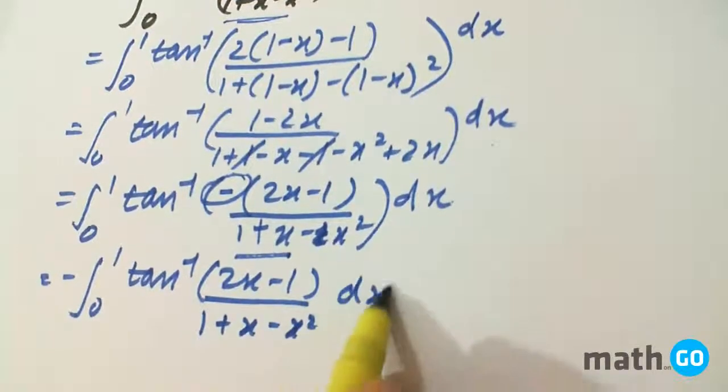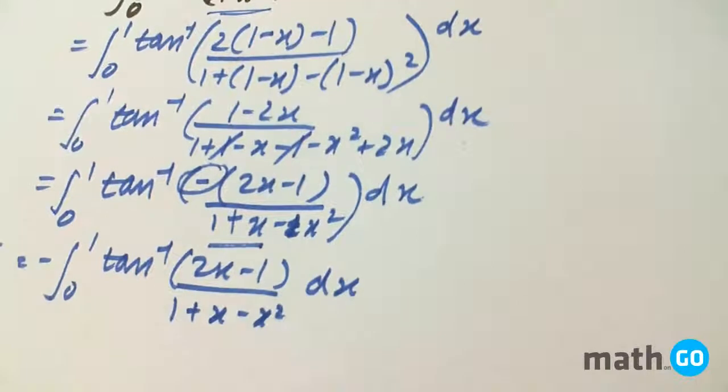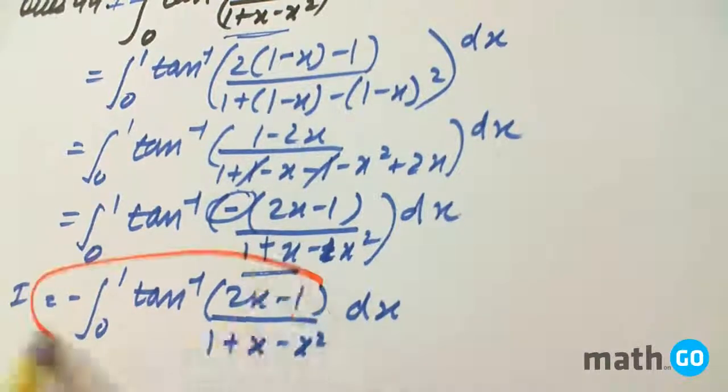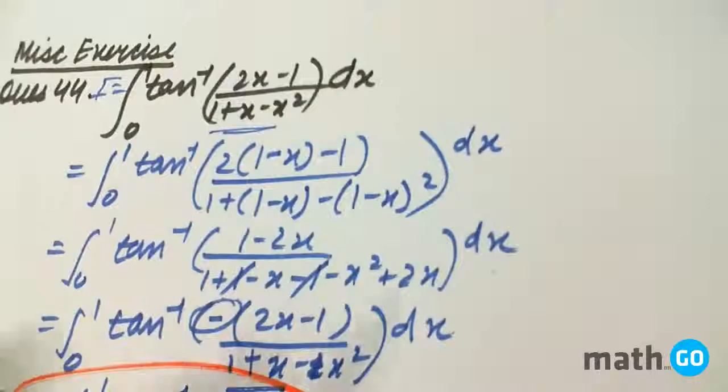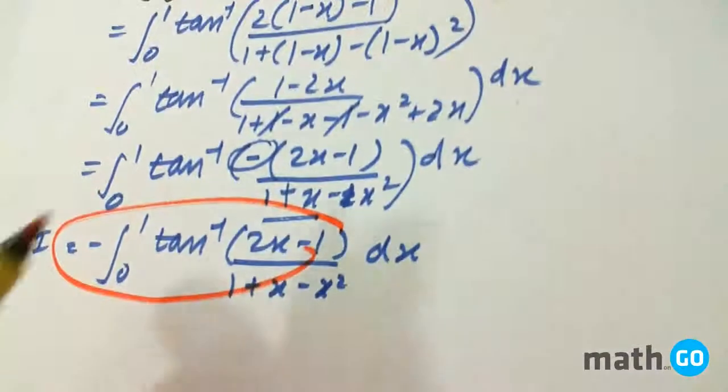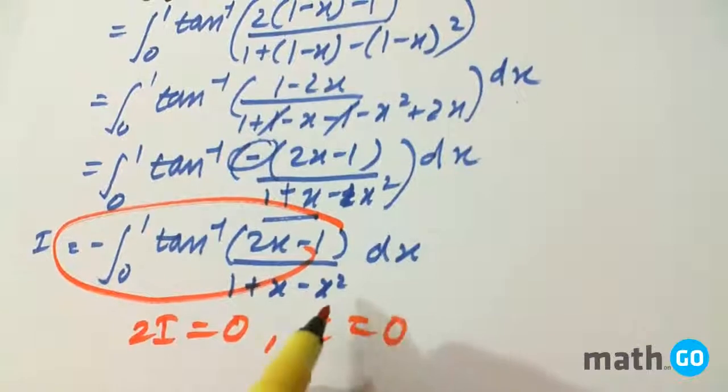This is also equals to I. So if we add these two expressions, that is this one and this one, we will be left with 2I equals to 0, or I equals to 0. Hence the answer.